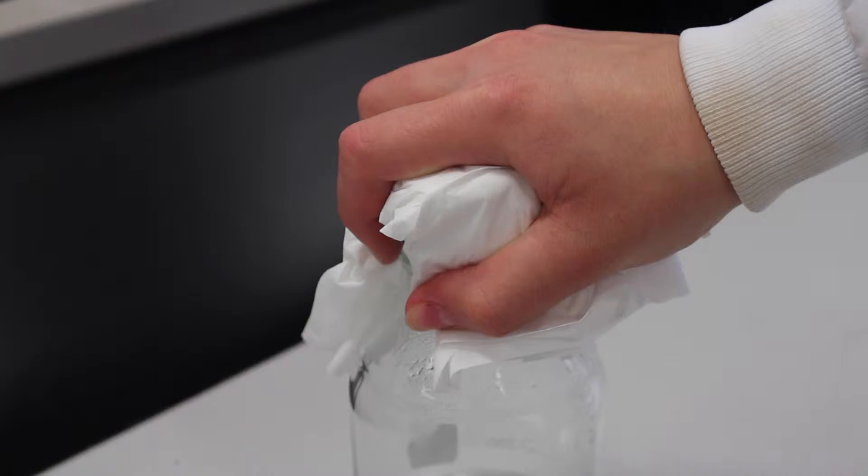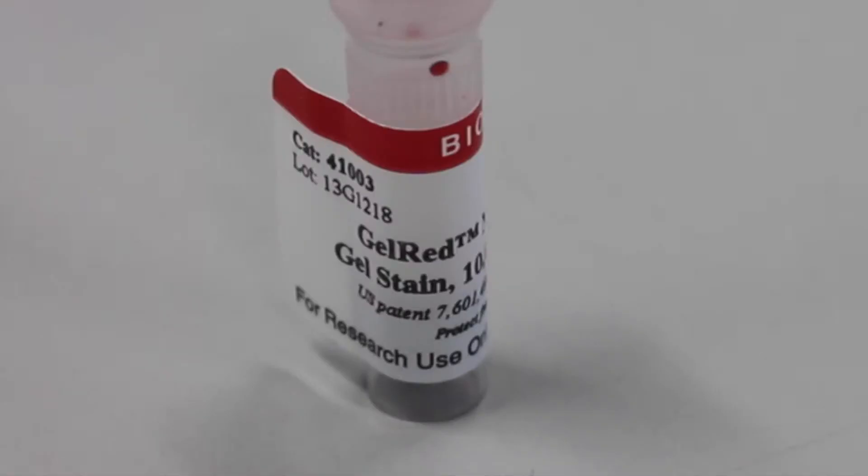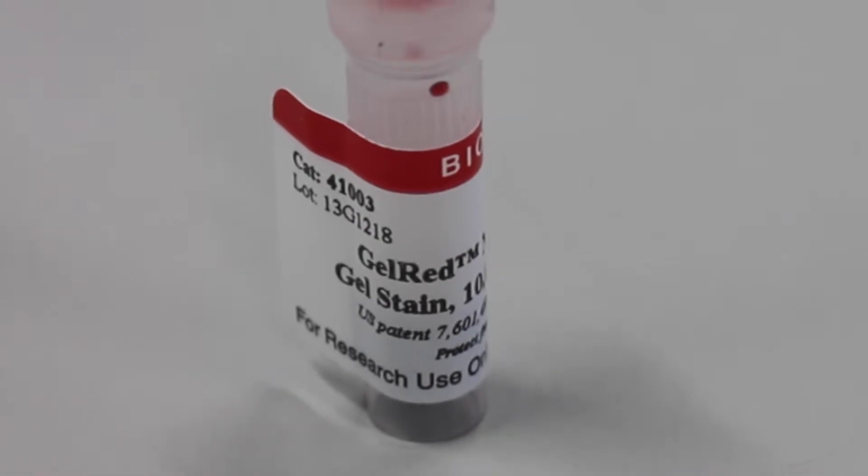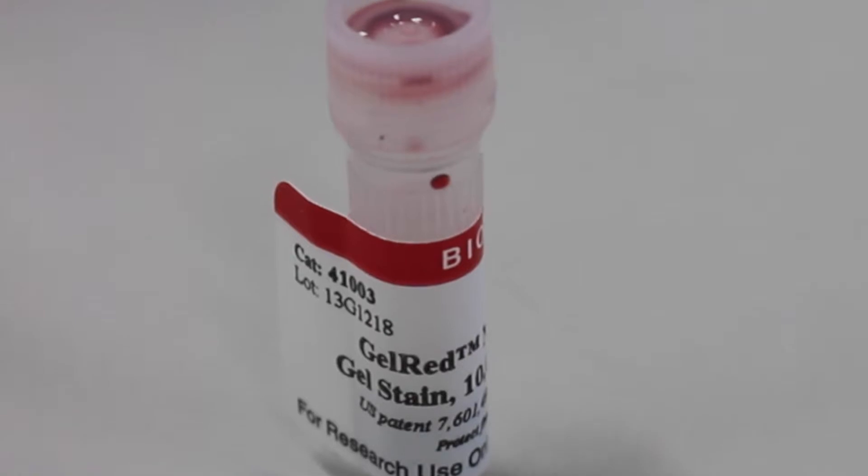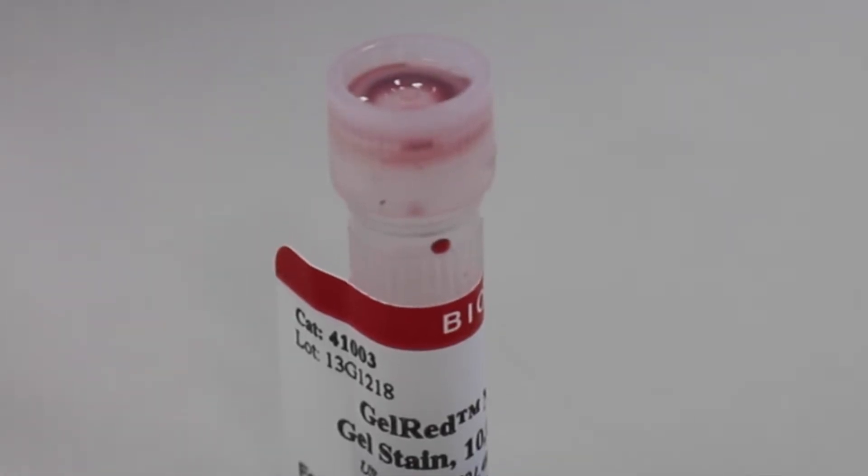The agarose solution is now allowed to cool down. Gel red, which is a DNA stain, is added once the solution is cool enough to touch. This step is important because this DNA stain allows the DNA to be visible under UV light later on.